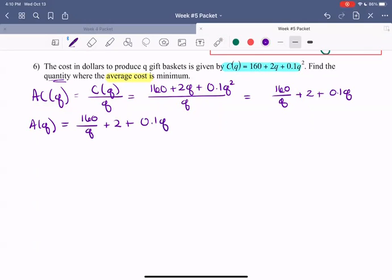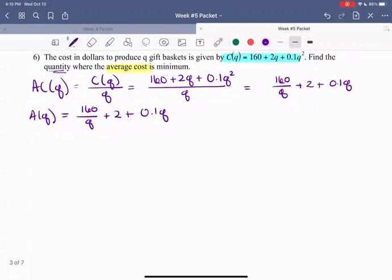So now our job is to find that quantity where this average cost is minimized. So that means, as we've seen before, we need to find the derivative of average cost. So we need to find average cost, the derivative, AC prime.